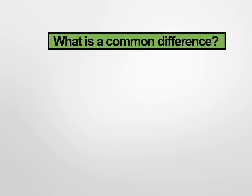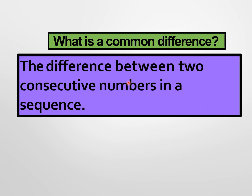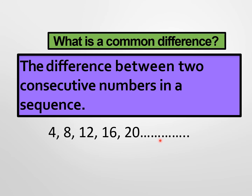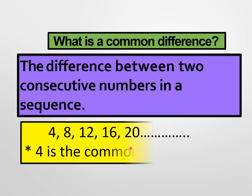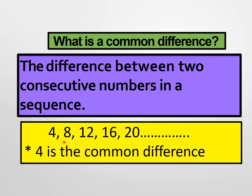In an arithmetic sequence, there is what we call the common difference — the difference between two consecutive numbers in a sequence. For example, with 4, 8, 12, 16, and 20: 8 minus 4 equals 4, 12 minus 8 equals 4, 16 minus 12 equals 4, and 20 minus 16 equals 4. Since they all have the same difference, 4 is the common difference of this sequence.